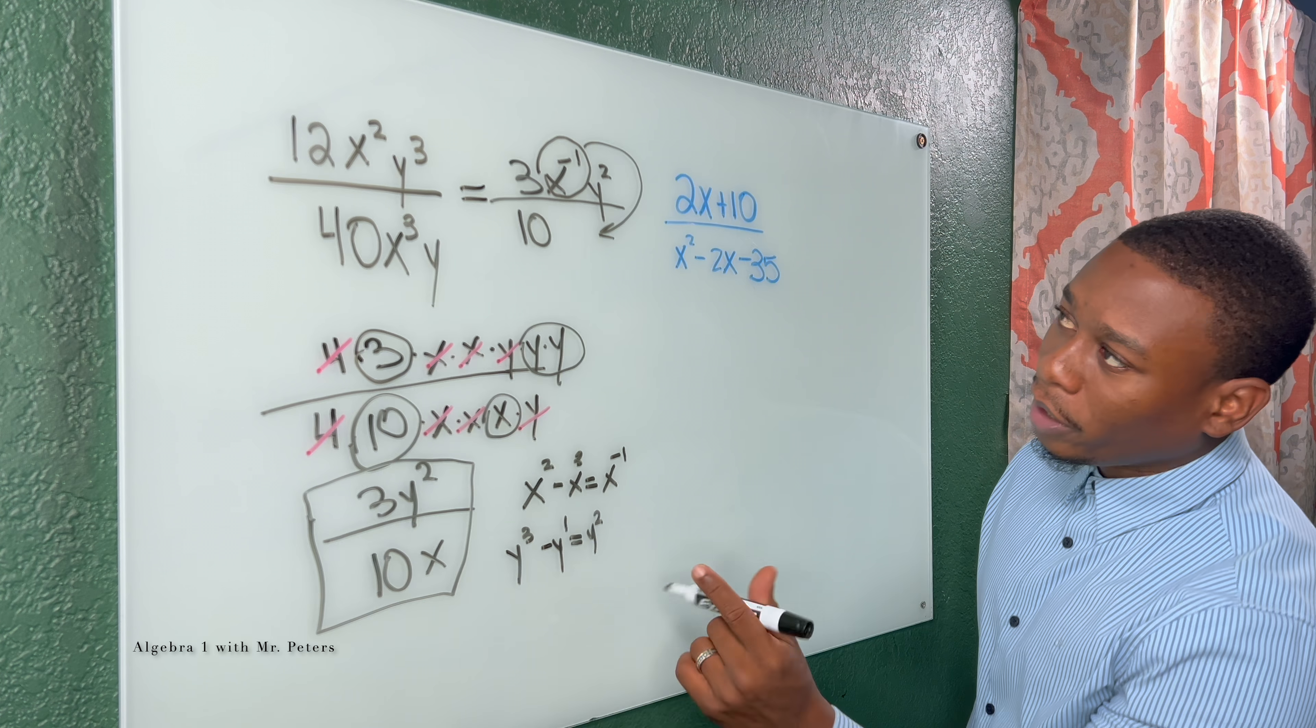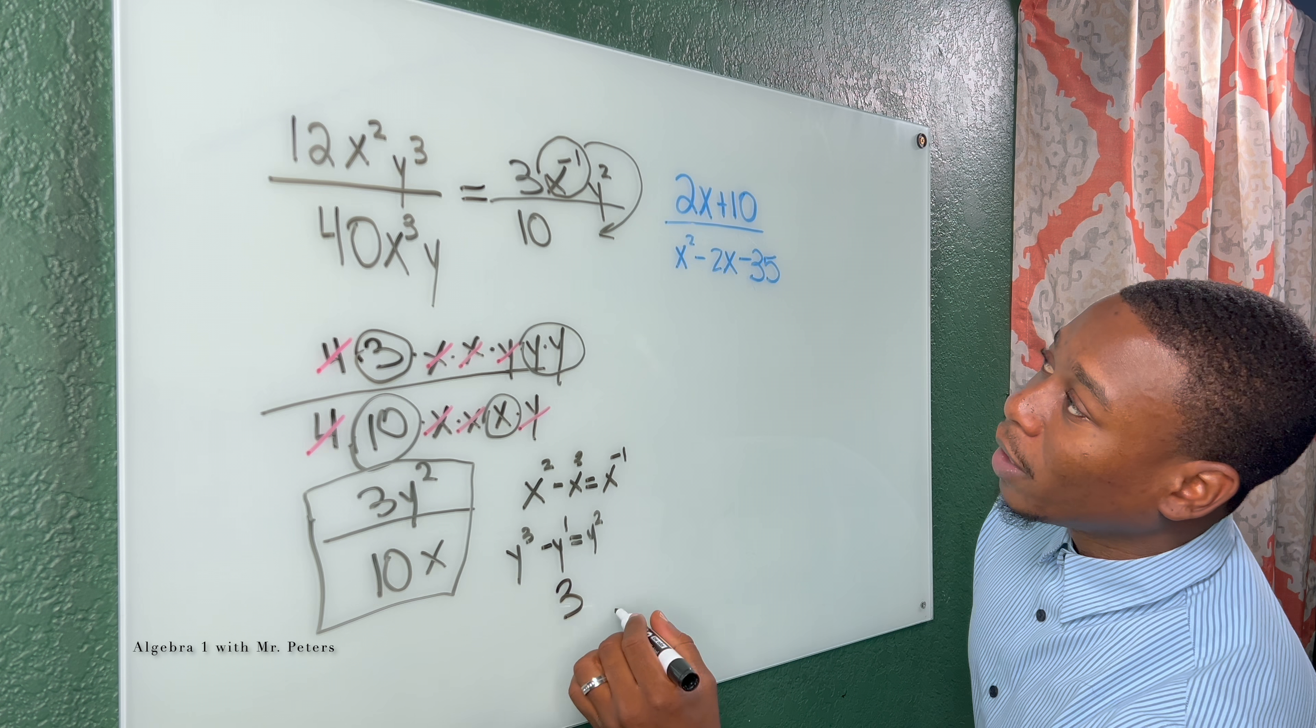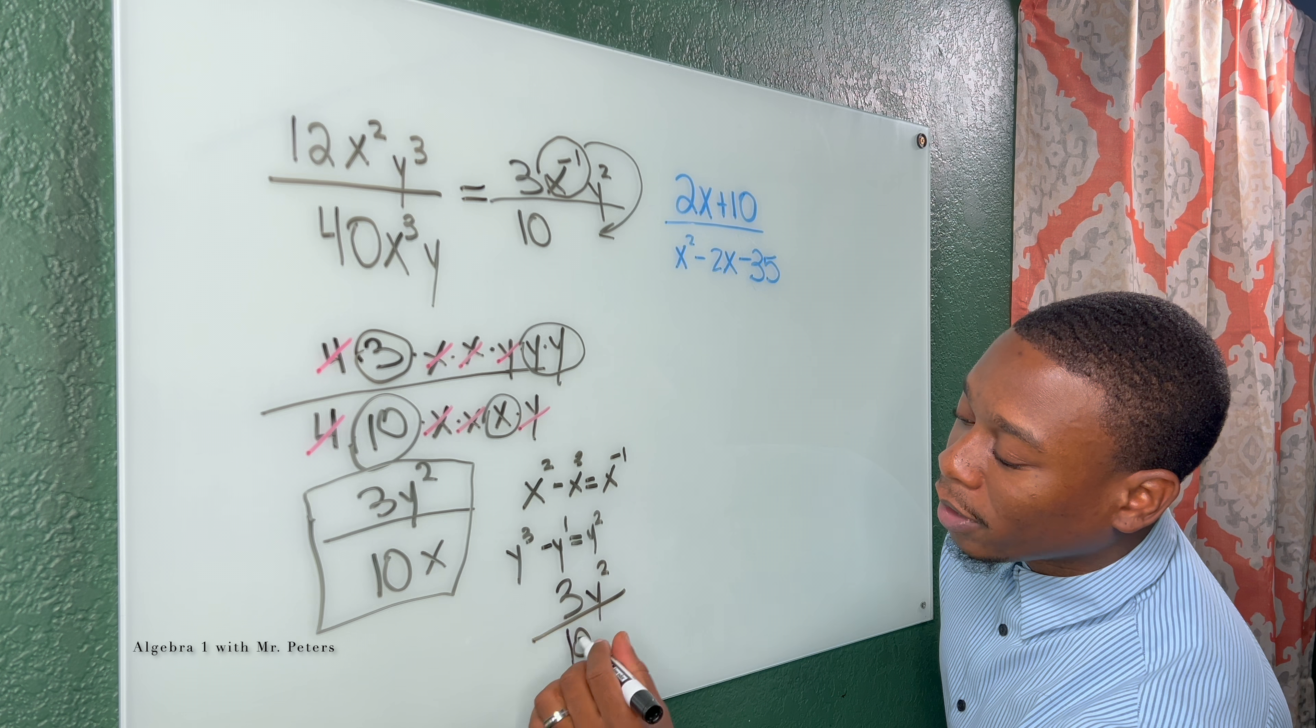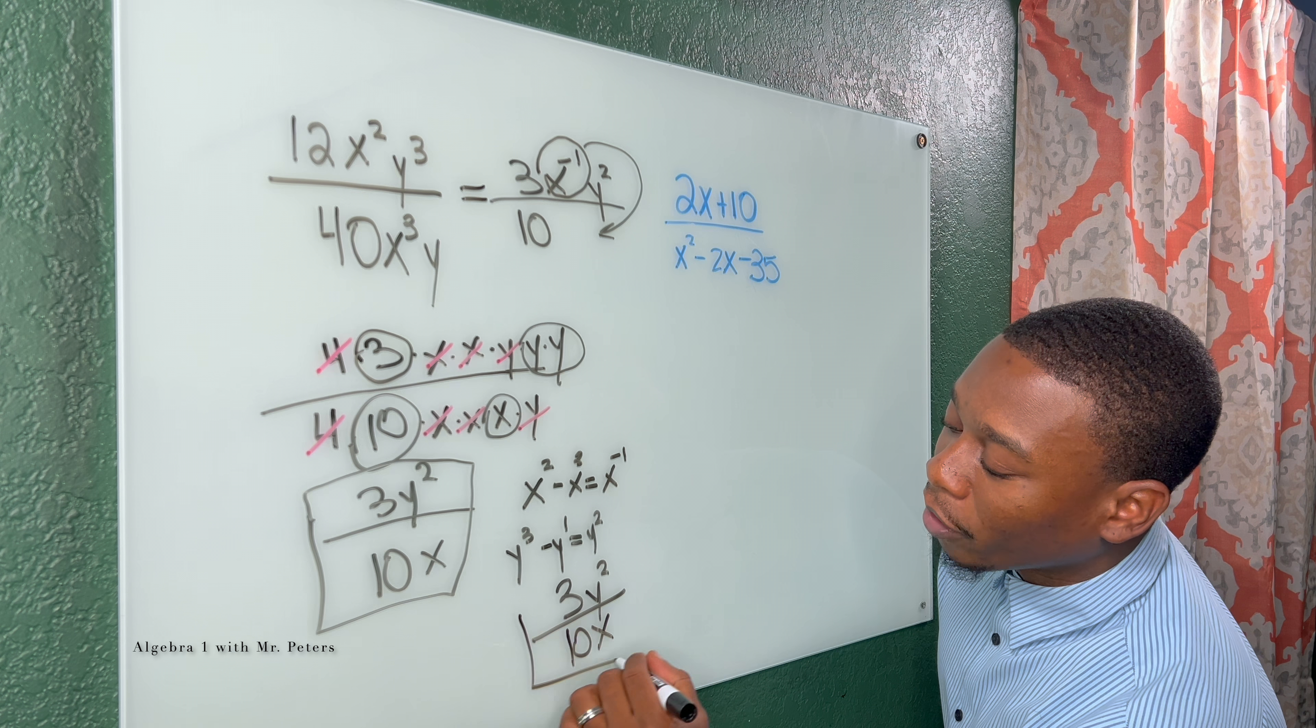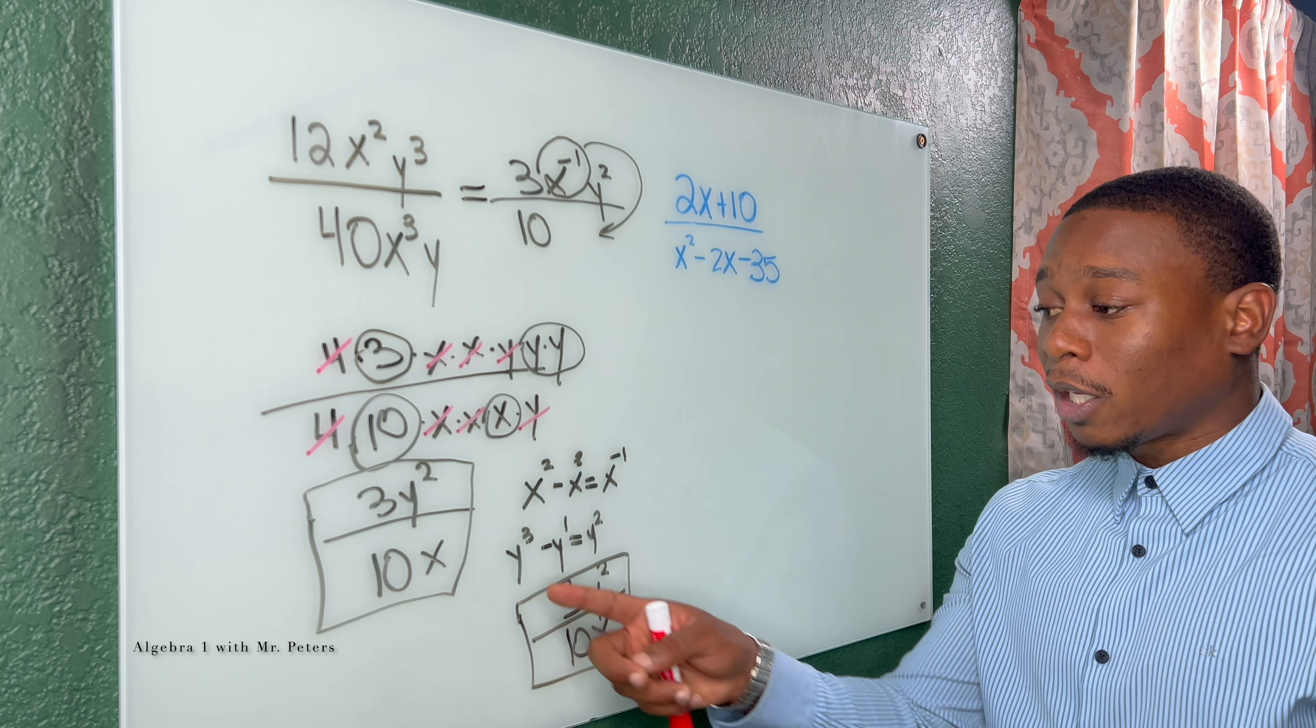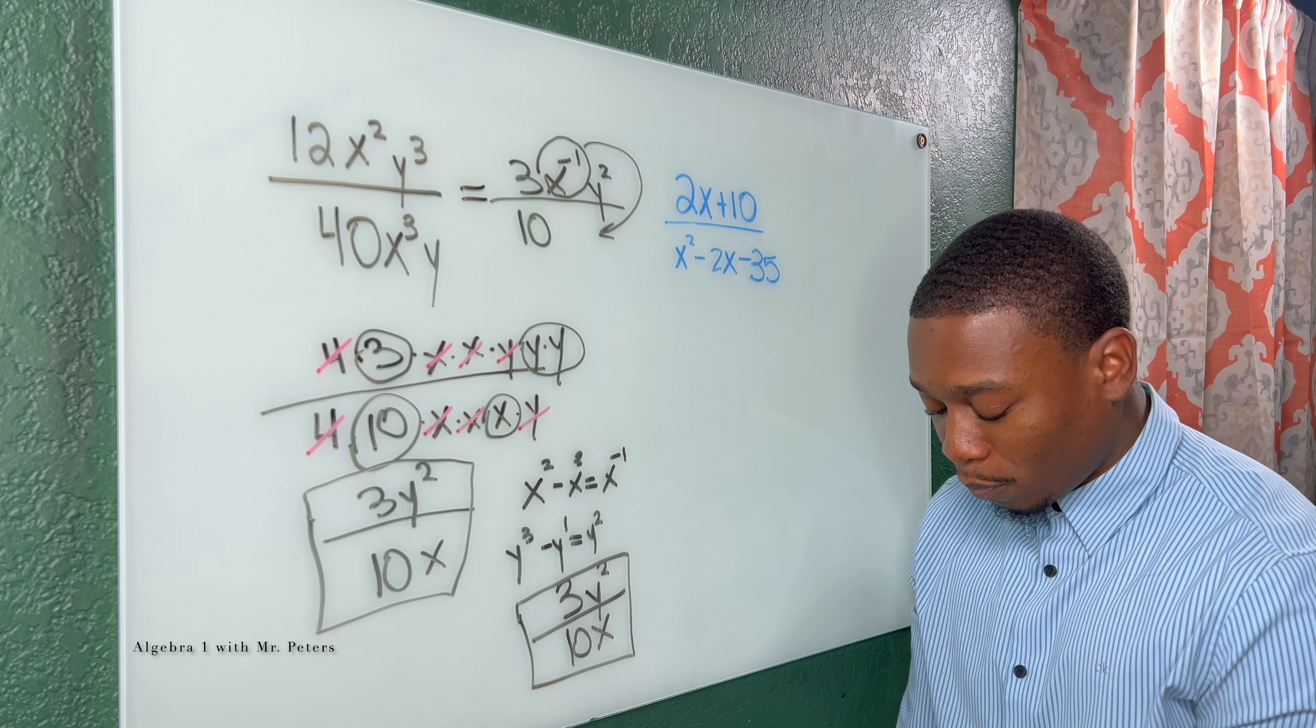So when I come down here now, we're going to get the same answer of 3y to the second power all over 10x. Now the x has a positive exponent of 1, and we have the same answer.